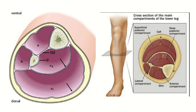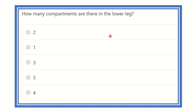Hey everyone, welcome to another session. For the MRCS section, we can see the question: how many compartments are there in the lower leg? The options are two, one, three, five, or four. We have to find out the number of compartments present in the leg.